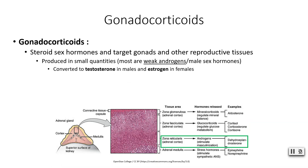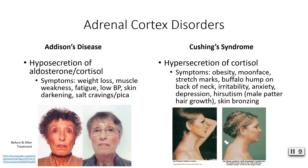Our inner layer of the adrenal cortex — the reticularis layer — is where gonadocorticoids are produced. These are steroid sex hormones that target the gonads and other reproductive tissues. They are produced here in very small quantities, and most are weak androgens — male sex hormones — which get converted to testosterone and estrogen in males and females respectively.